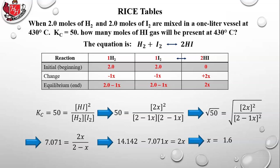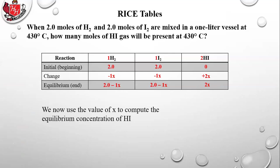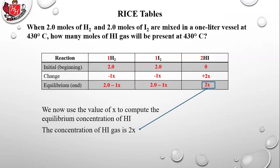X equals 1.6 is not our final answer. The question asks for moles of HI gas. We go back to the equilibrium row where HI equals 2X. Plugging in: 2 times 1.6 equals 3.2 molar of HI gas. Although not asked, we could also find H2 and I2: 2 minus 1.6 equals 0.4 molar for both H2 and I2 — those are their final equilibrium concentrations.